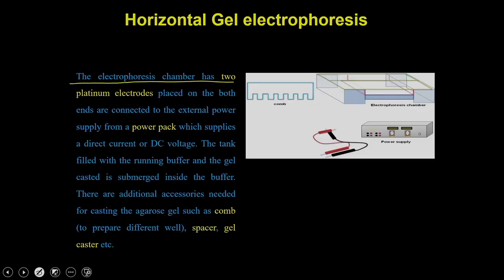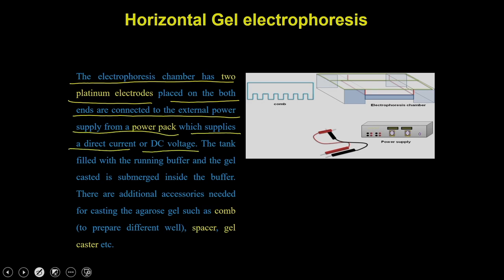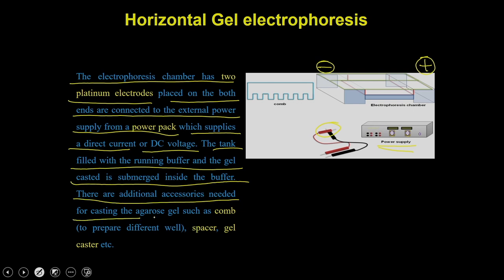The electrophoresis chamber has two platinum electrodes placed on both ends, connected to an external power supply from a power pack that supplies direct current (DC) voltage. The tank is filled with running buffer and the gel is submerged inside the buffer. Additional accessories needed for casting the agarose gel include a comb to prepare wells, a spacer, and a gel caster.